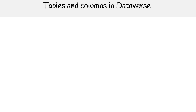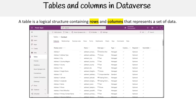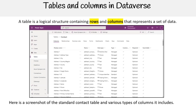Hey, this is Andrew Brown from ExamPro and we'll be covering tables and columns in Dataverse. A table is a logical structure containing rows and columns that represents a set of data. Here is a screenshot of the standard contact table and various types of columns it includes.